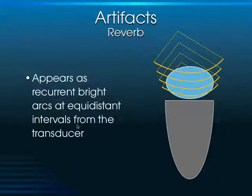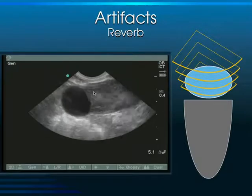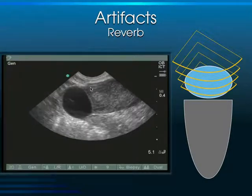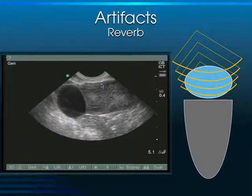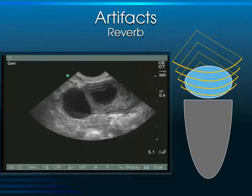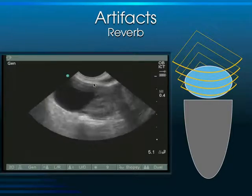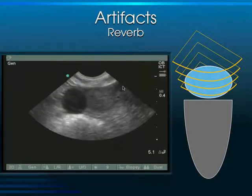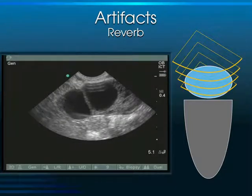Reverberation or reverb artifact appears as equidistant arcs coming down from the top of the probe. It's a natural artifact seen in all transducers. You'll know it's an artifact because these arcs cross the wall of the organ into the adjacent space.